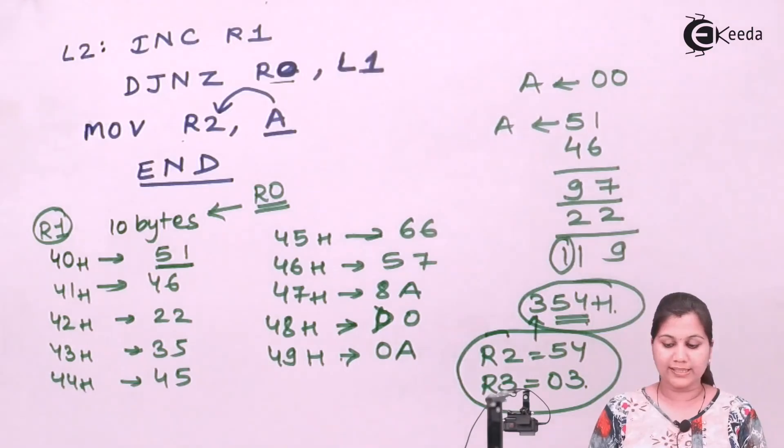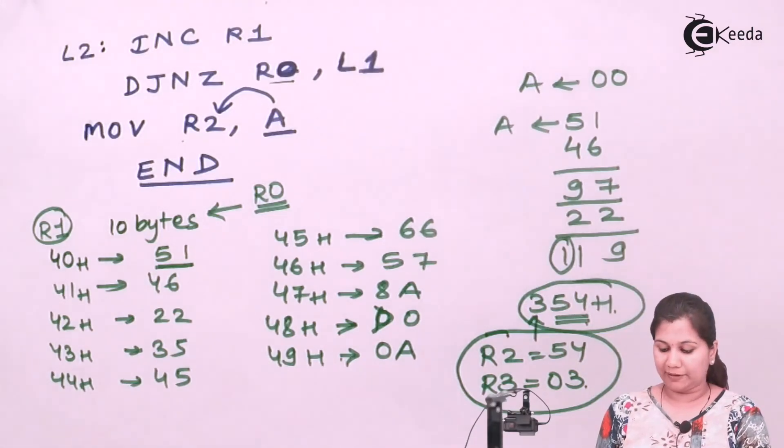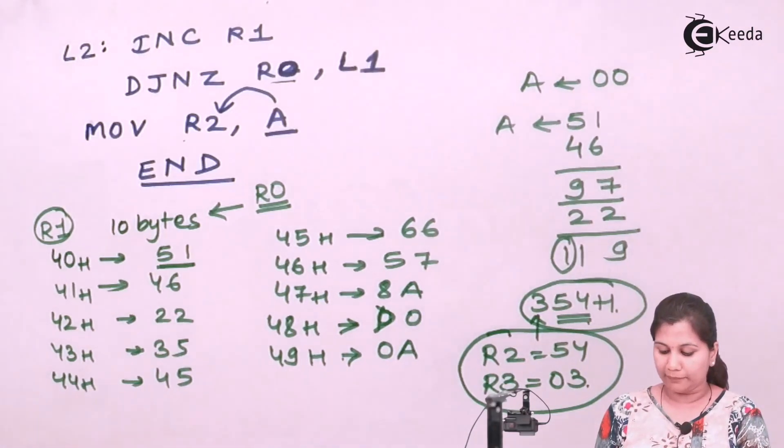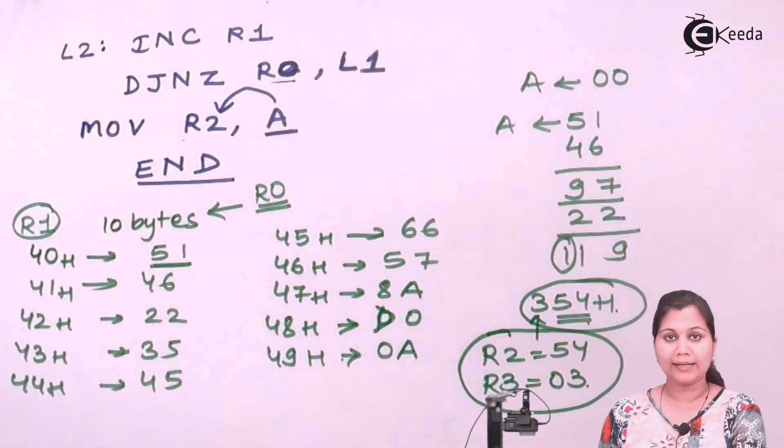This is an assembly language program to add a block of data, assuming that after the addition the sum is a 16-bit number. I hope that this program is now clear to you. Thank you.